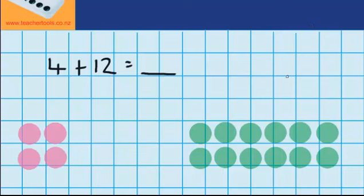Well this time let's just try counting on from our biggest number. So over here we've got twelve, which means this would be thirteen, fourteen, fifteen, and sixteen. So four plus twelve must equal sixteen.